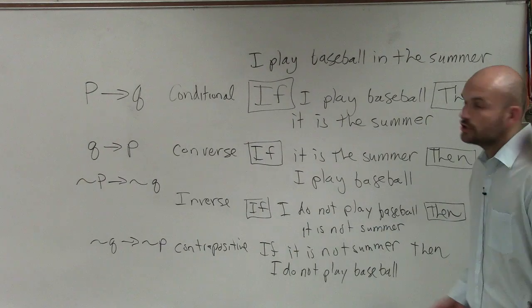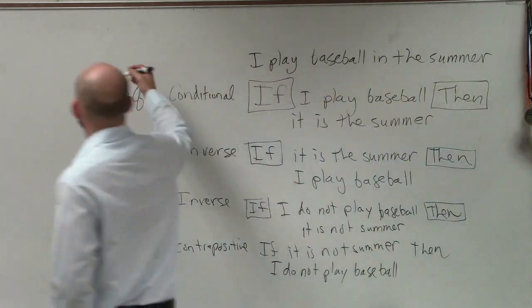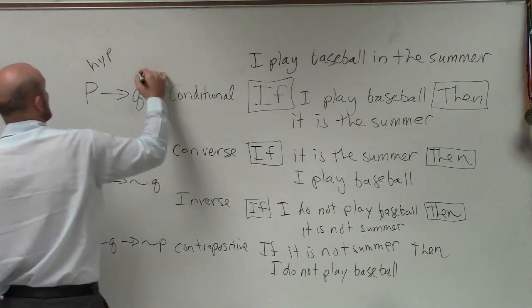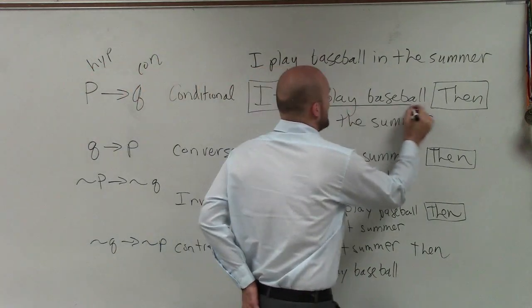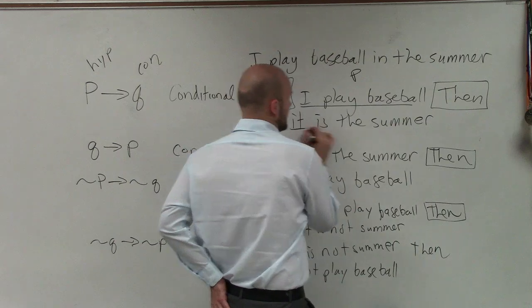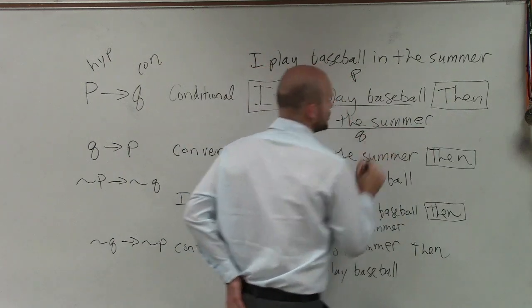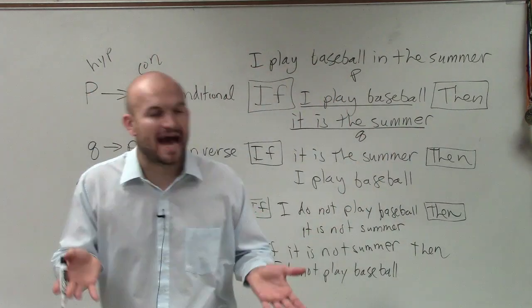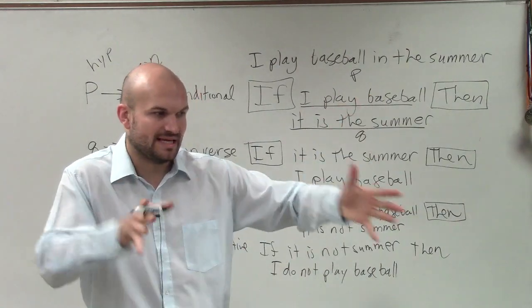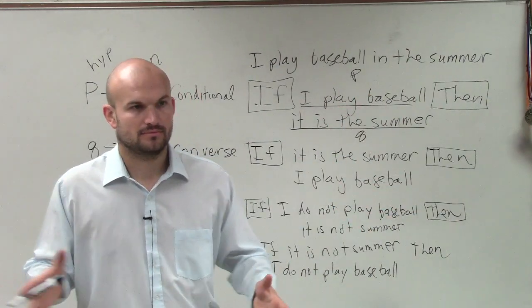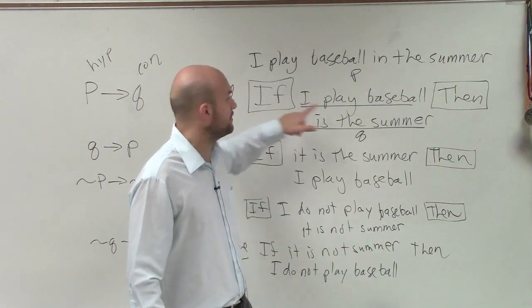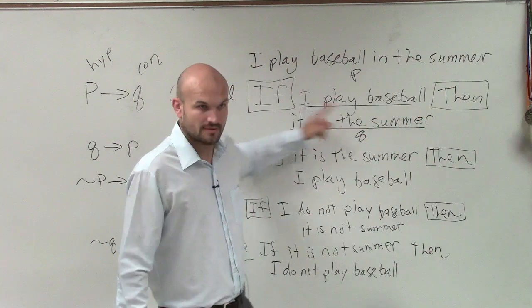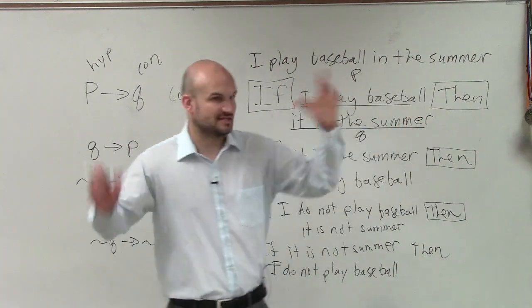P and Q just represent the hypothesis and the conclusion. Remember, this is your hypothesis, which we can call P, and this is your conclusion, which we call Q. So rather than writing it out all the time, I can just use notation of P and Q. This whole thing, once you follow the if, that's what we call the hypothesis.